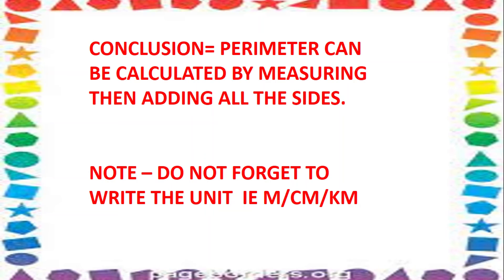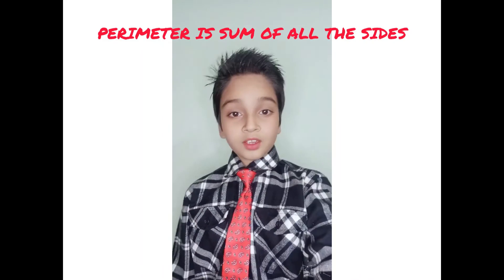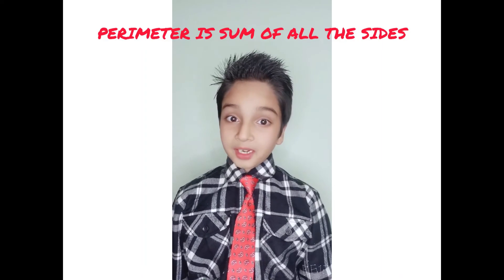You have to move in a clockwise direction. So, what we have learned? Number one: The perimeter is the sum of all the sides.